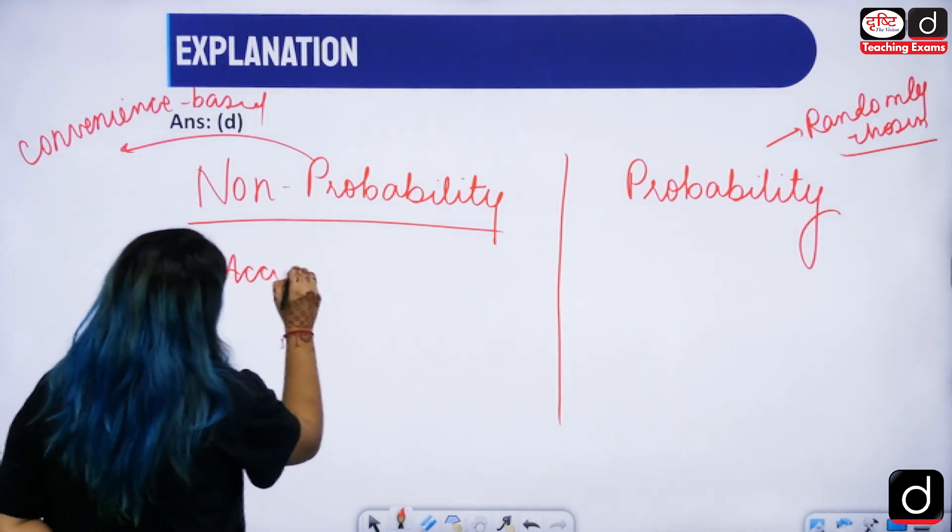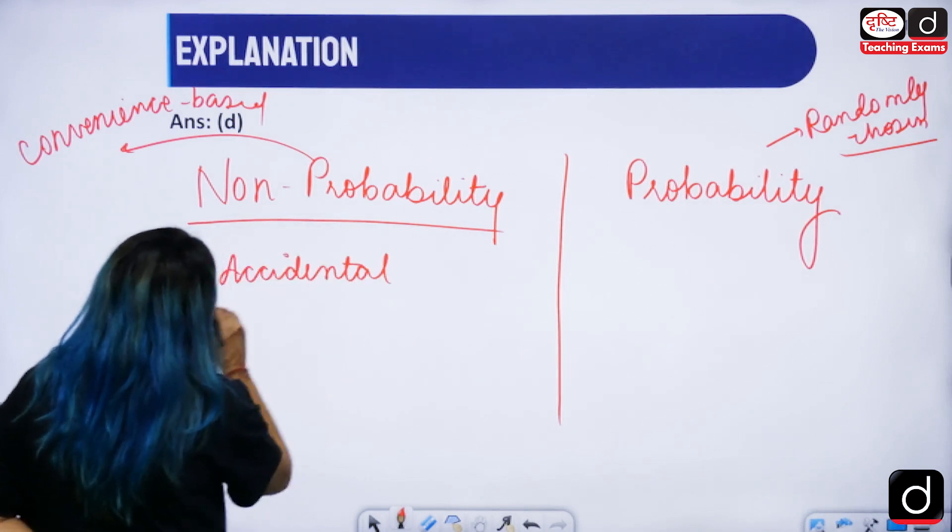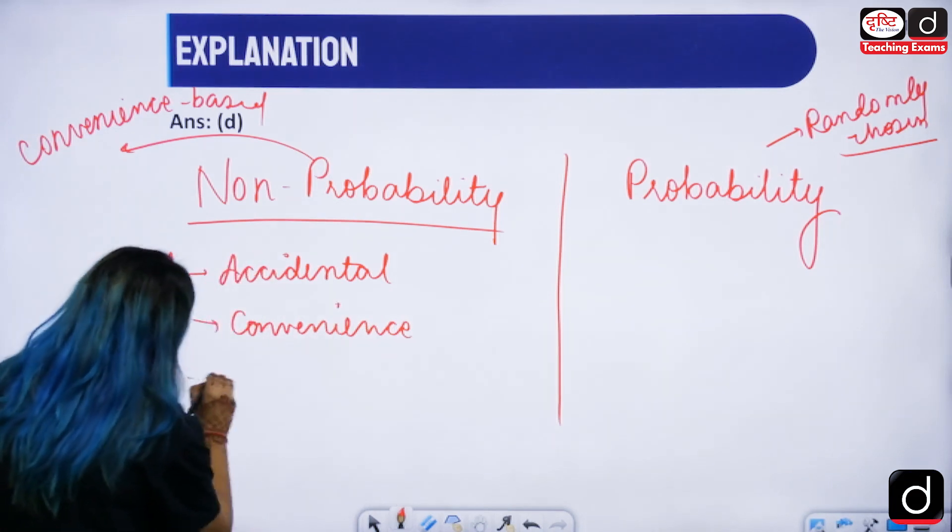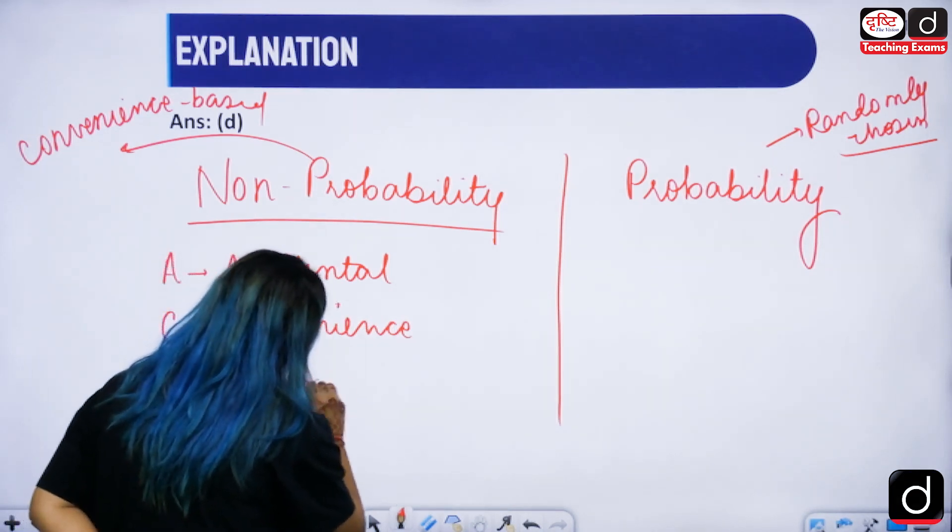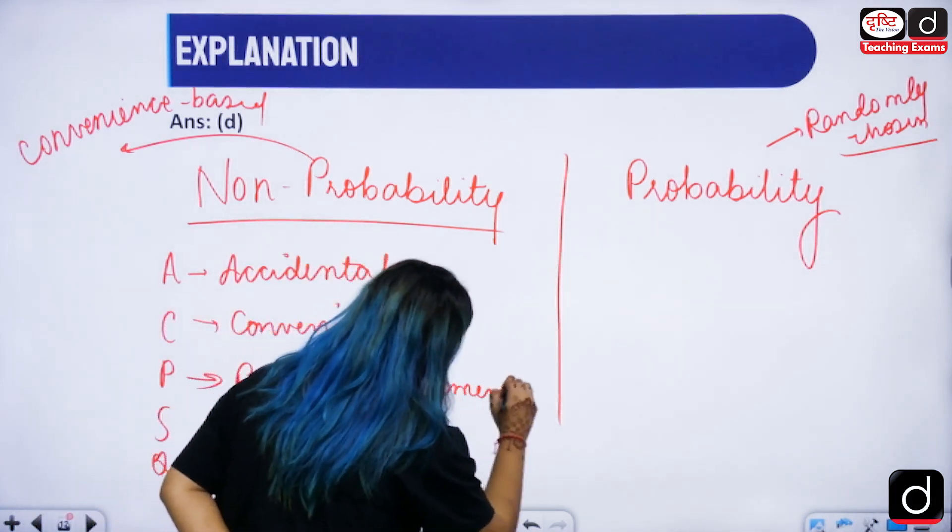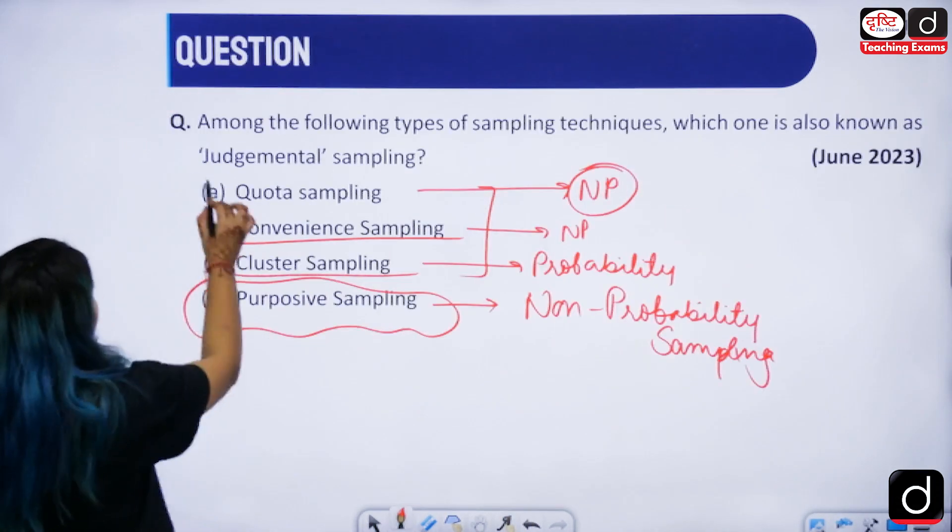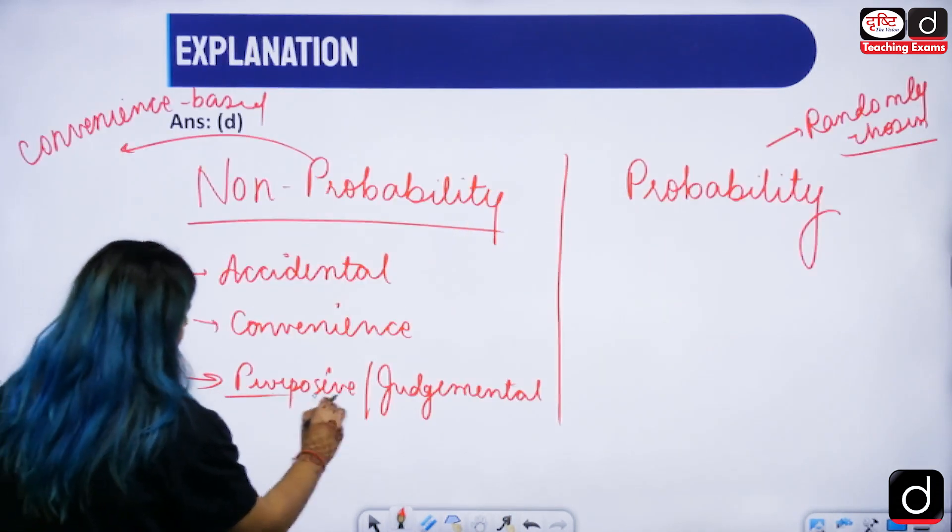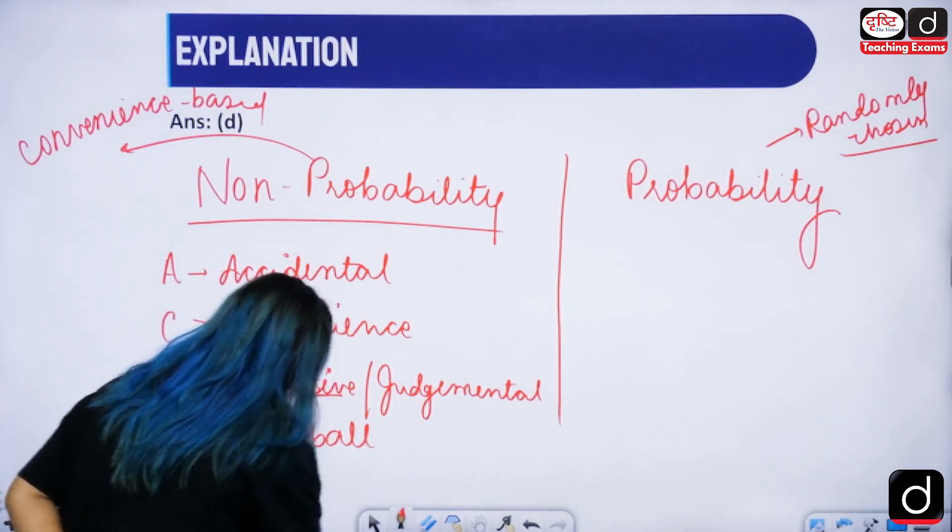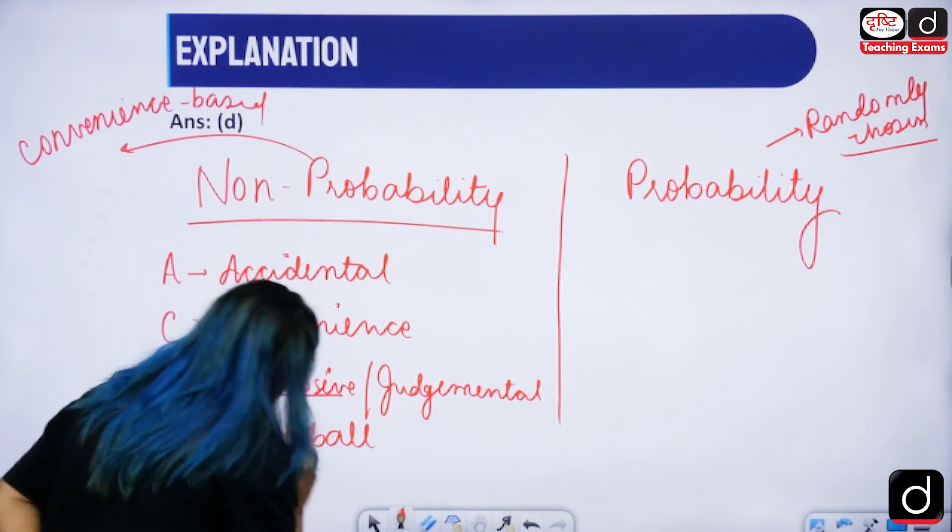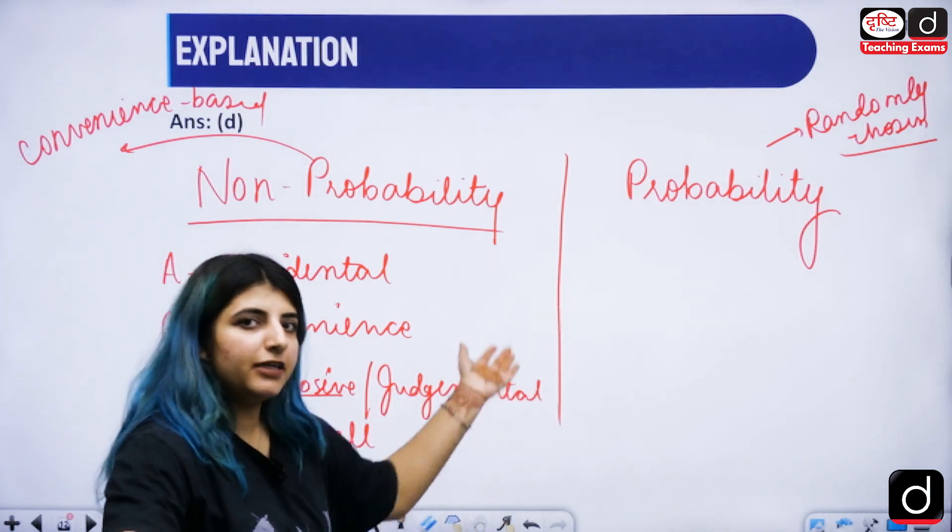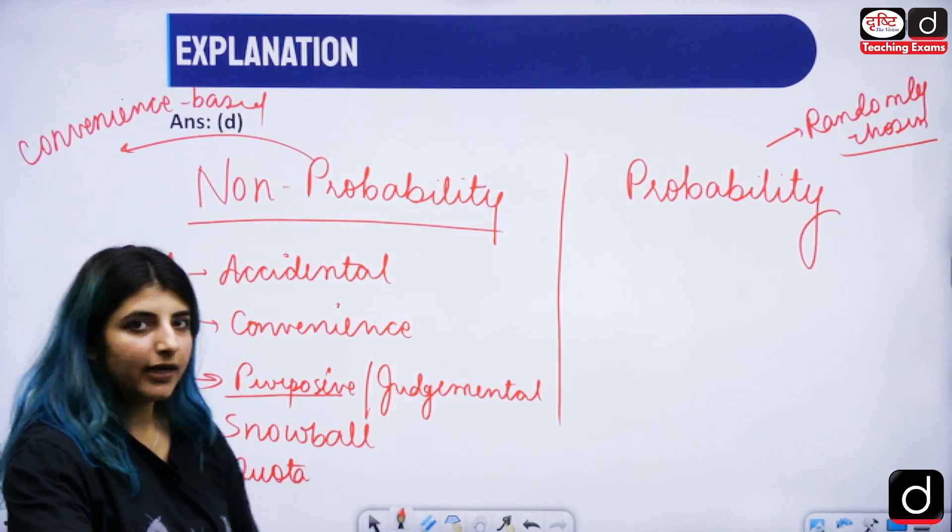Because we are dealing with a subtype, the answer is of non-probability. We need to know that there are major types. A stands for accidental. C stands for convenience. P stands for purposive, which is also known as judgmental sampling. That was our question. S stands for snowball sampling and Q stands for quota sampling. We will be delving deep into the major concepts of these particular two types of sampling techniques in further videos as well.